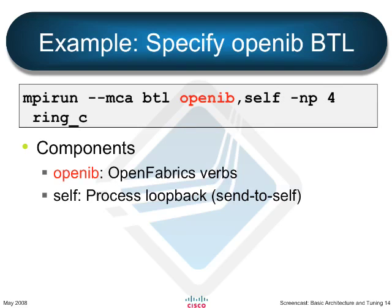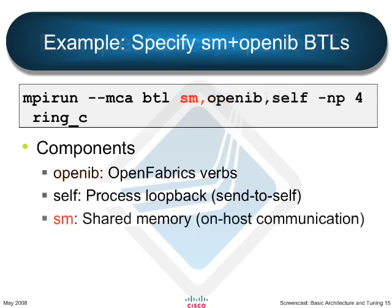Let's say I want to use the OpenIB BTL. OpenIB is for open fabrics networks, either iWARP or InfiniBand. So instead of using TCP, you just put 'openib,self' there, and your program is now using OpenFabrics networks. Or take another variation: 'sm,openib,self' — it's a comma-delimited list and can be as many values as you'd like. SM is shared memory. So if you have a high core count set of servers, shared memory will be used for on-node communication, OpenIB for off-node communication, and self for process loopback.